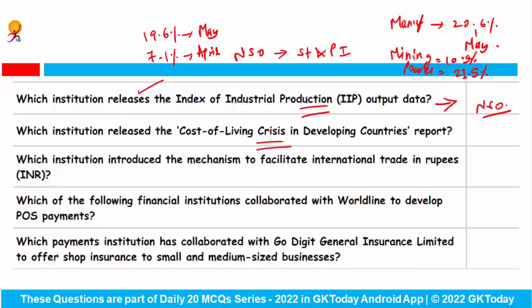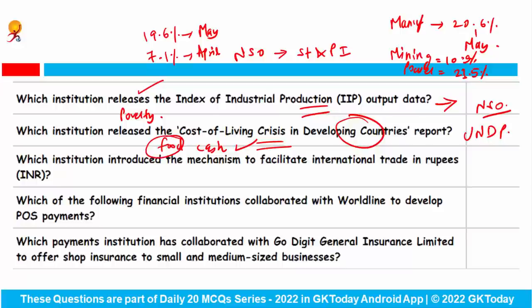Which institution released the 'Cost of Living Crisis in the Developing Countries' report? The United Nations Development Programme released this report, which shows that inflation will have only negligible impact on poverty in India. As per the report, targeted transfers help poorer households cope with price rises. In India, food was provided under Pradhan Mantri Garib Kalyan Yojana and cash was also given under the same scheme.